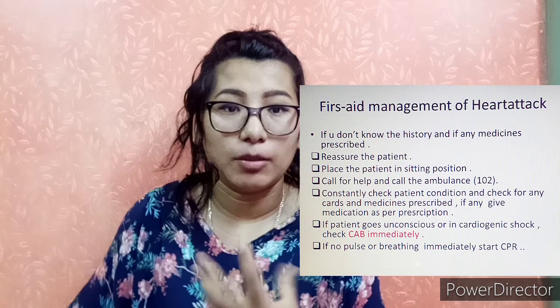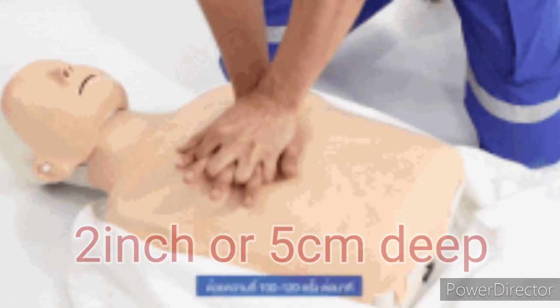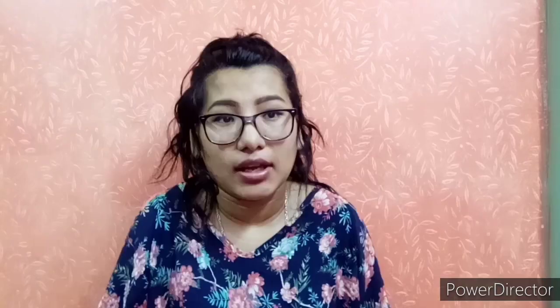Then we can start CPR. Chest compressions should be 2 inches or 5 cm deep. We compress at a rate of 100 compressions per minute with 2 rescue breaths.